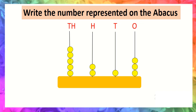Now see another example of writing the number represented on the abacus. At ones place, three beads are given, so the ones place digit is three. At tens place, one bead is given, so the tens place digit is one. At hundreds place, two beads are given, so the hundreds place digit is two. The number is 213.